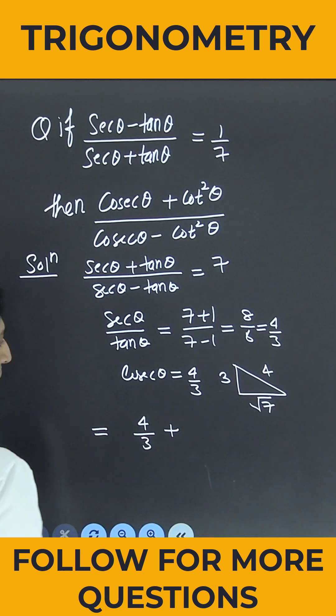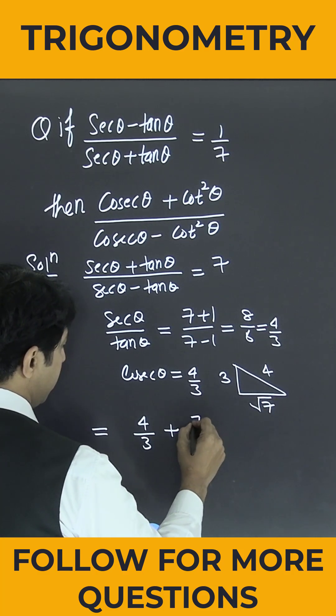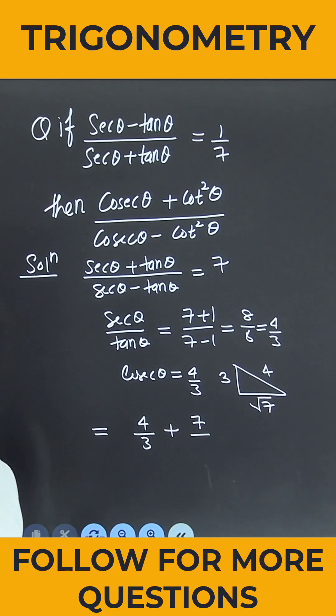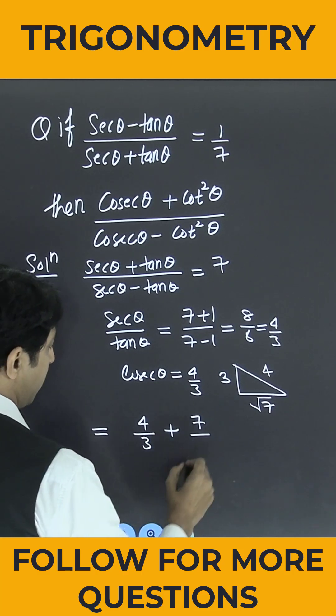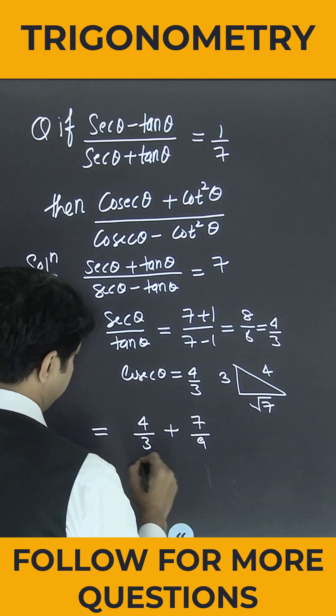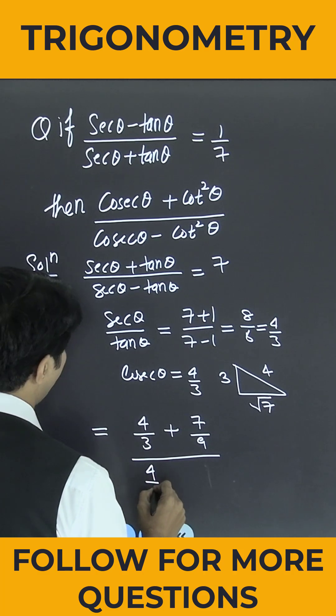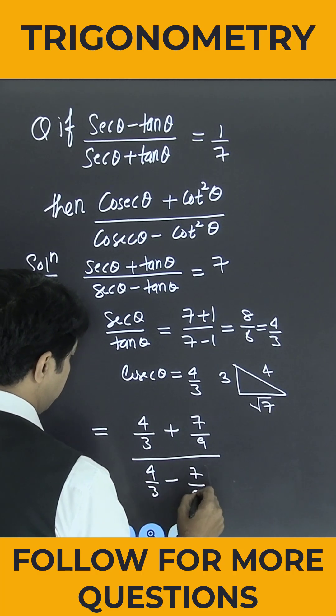Plus cot squared θ. So it is base squared, so this is 7 divided by perpendicular squared. So it will be 9. So can I say this is nothing but 4 by 3 minus 7 by 9?